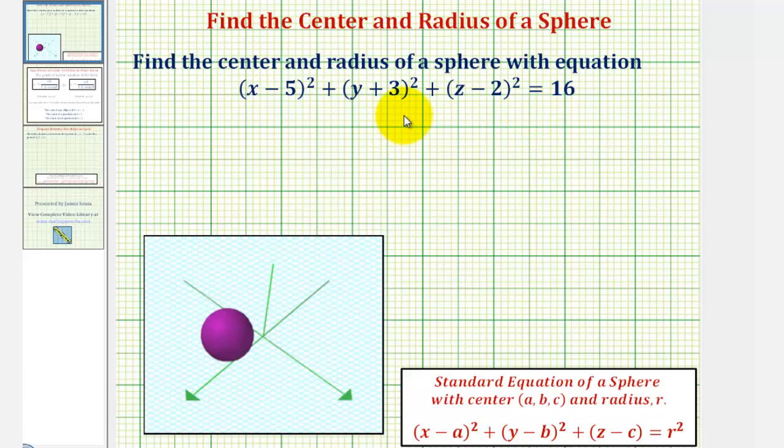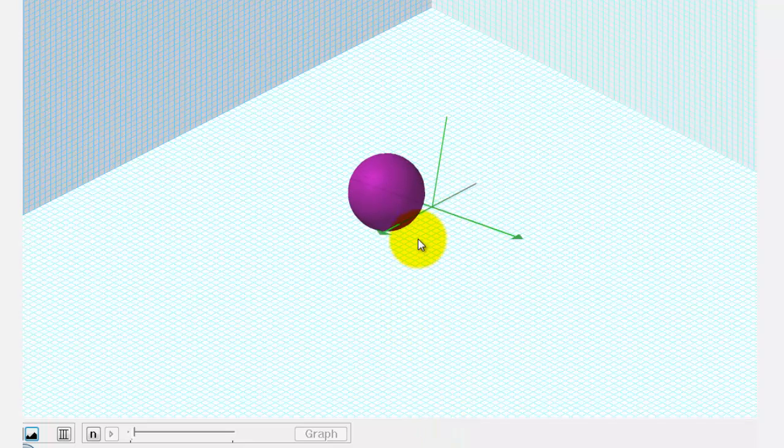If we were to graph this sphere in three dimensions, it would look like this, where this is the x-axis, this is the y-axis, and this is the z-axis.